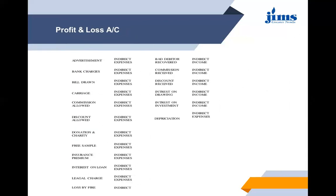Profit and loss account expenses, losses, and incomes are categorized accordingly. Advertisement is categorized under indirect expense. Bank charges — indirect. Carriage outward — indirect. Commission allowed — indirect. Discount allowed is also indirect. Donation and charity — indirect. Free sample — indirect.